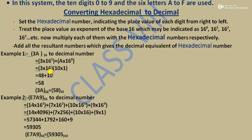Let's see this with an example. 3A is a hexadecimal number which we will convert to decimal. 3 stays as 3, and A has a value of 10. So: 3 × 16¹ + 10 × 16⁰. Going right to left, 16⁰ = 1 and 16¹ = 16. Multiplying: 3 × 16 = 48, and 10 × 1 = 10. Adding: 48 + 10 = 58.